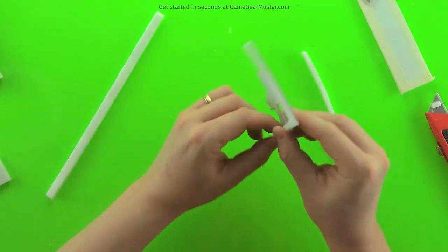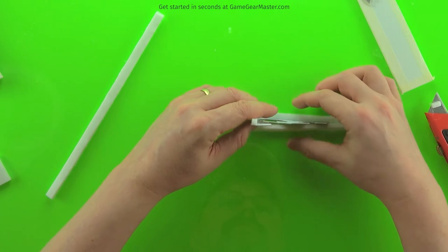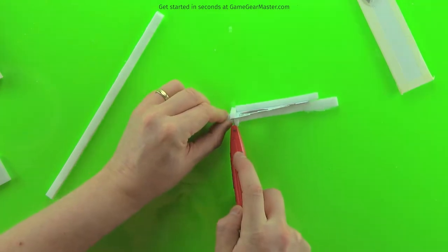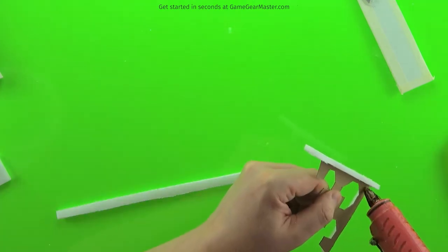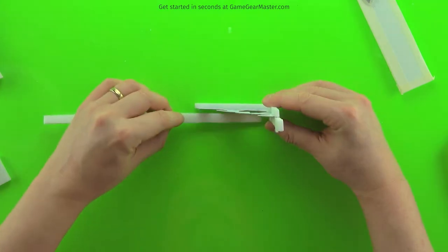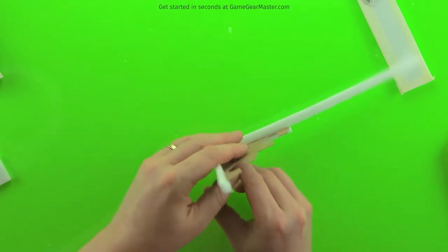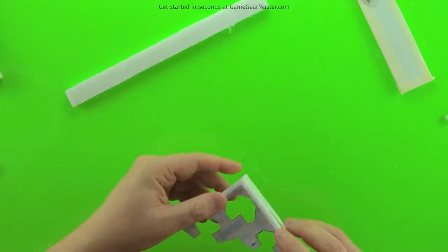Then we're going to take our two sheet thick strip of foam board and glue that to the bottom. So now we've got our single sheet thick strips on top and our double sheet thick strips on the bottom.